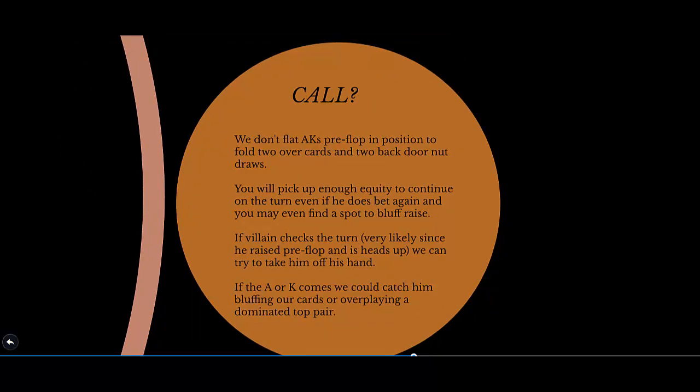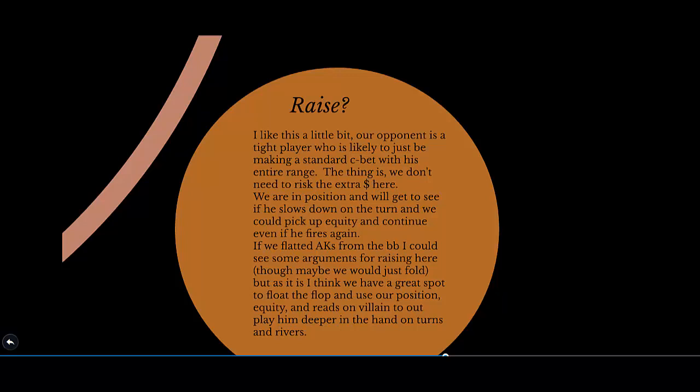What about call? We don't flat ace-king suited preflop in position just to fold two overcards and two backdoor nut draws. You'll pick up enough equity to continue on the turn even if he bets again, and you may find a spot to bluff-raise. If villain checks the turn — very likely since he raised preflop and is heads up — we can try to take him off his hand. If the ace or king comes, we can catch him bluffing or overplaying a dominated top pair. Raising is also an option — villain is likely just making a standard C-bet with his entire range — but we don't need to risk the extra money in position. Float the flop and use position, equity, and reads on villain to outplay him on the turn and river.